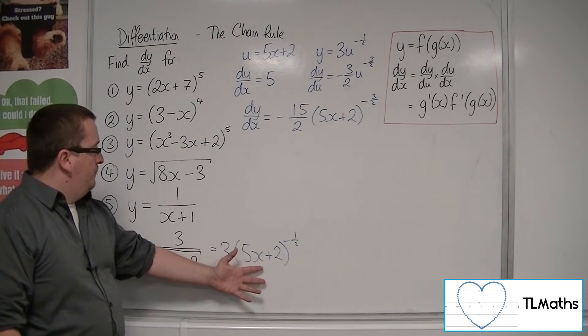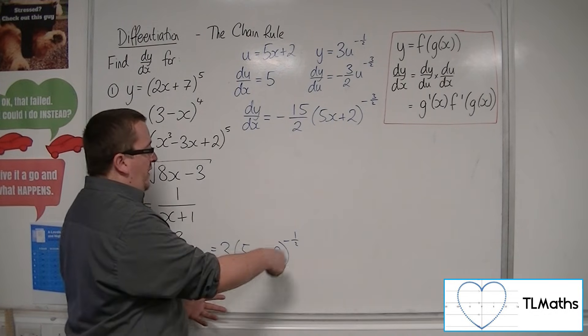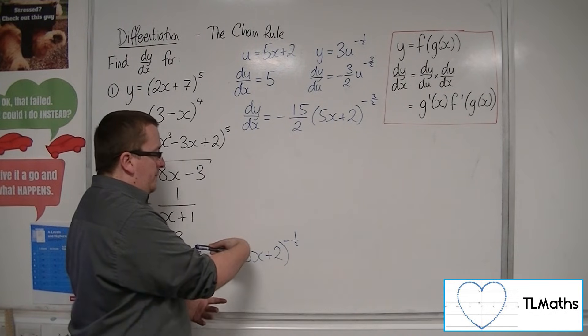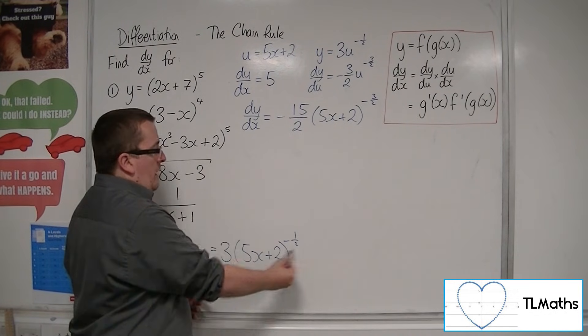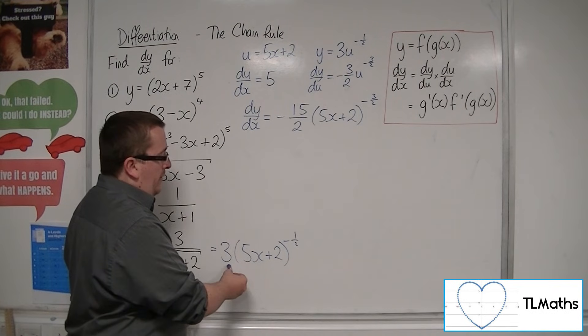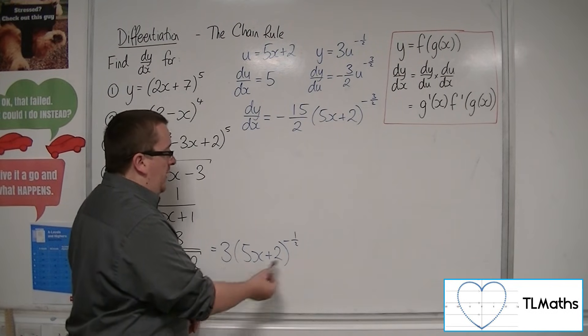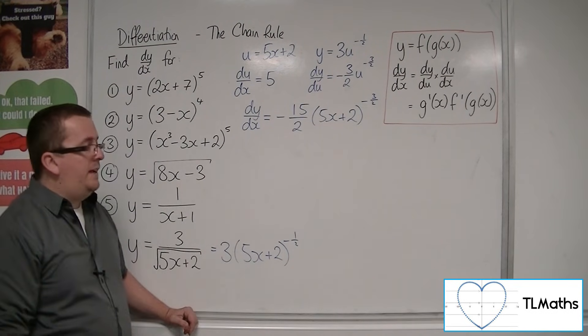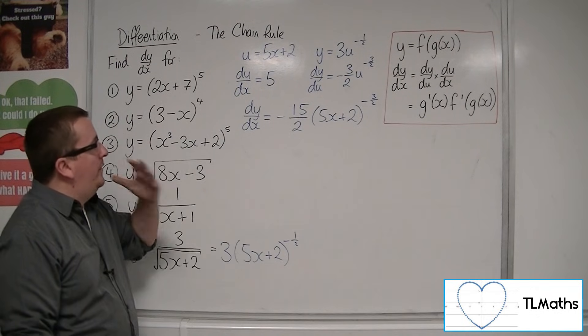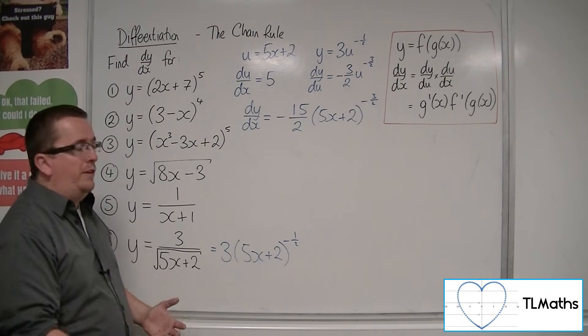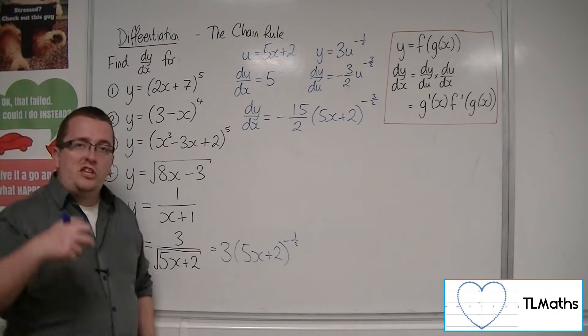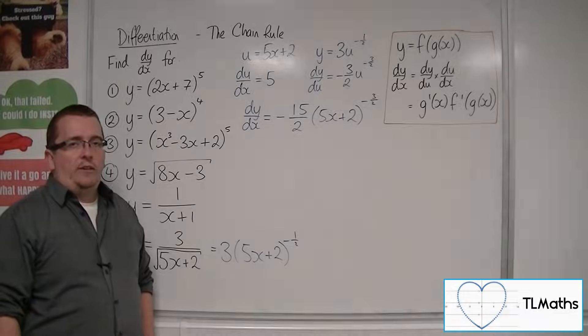So with this one, you've got the derivative of what's inside coming outside, getting the 15. The minus 1 half comes down to the front, multiplies with the 15 to make minus 15 halves. And then you took one off the power. So there is a quicker way of doing these. And I'm going to go through some more of those examples just using the quick method in the next video.